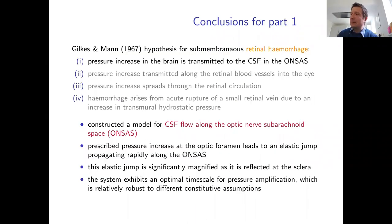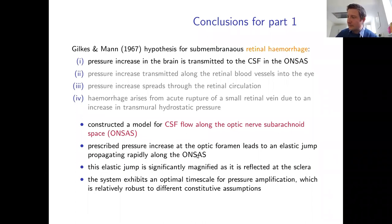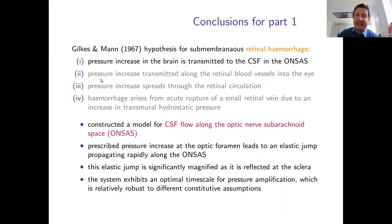To summarize Part 1: a model for CSF flow along the ONSAS shows that prescribing a pressure increase in the brain produces a propagating and reflecting wave. Using a nonlinear tube law, significant magnification of this wave is seen at the sclera, with an optimal time scale for maximum amplification that is relatively insensitive to constitutive assumptions. Part 2 now examines what happens to the retinal blood vessels as pressure increases in the ONSAS.